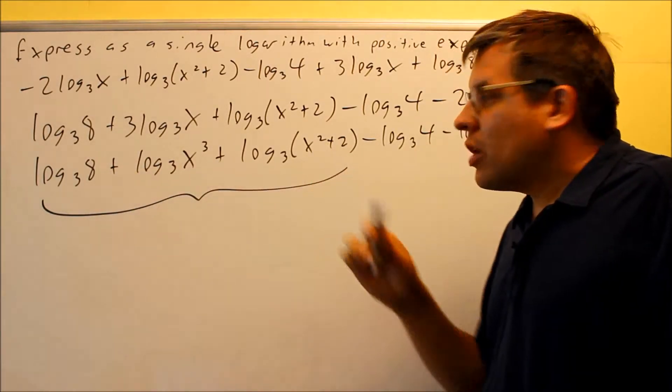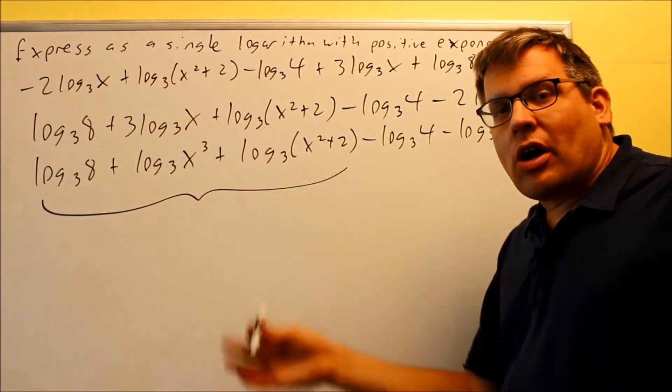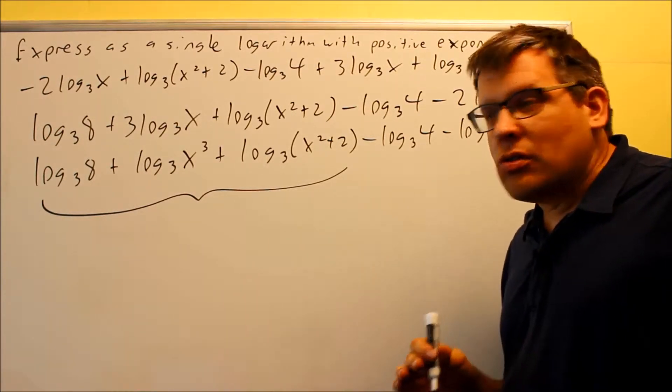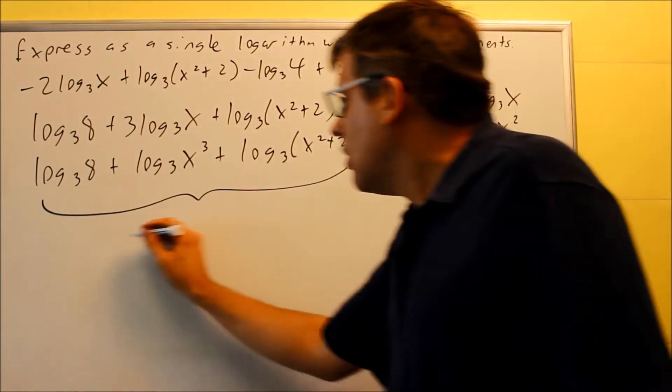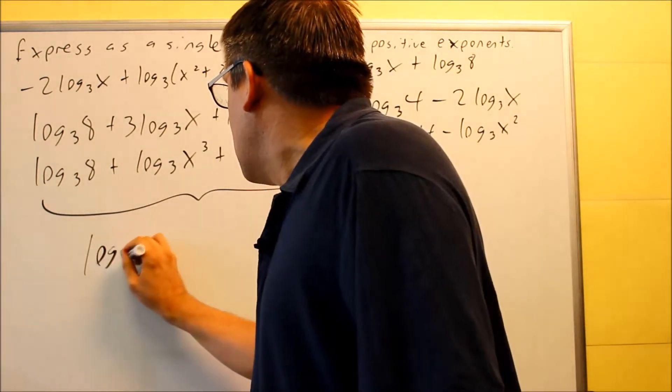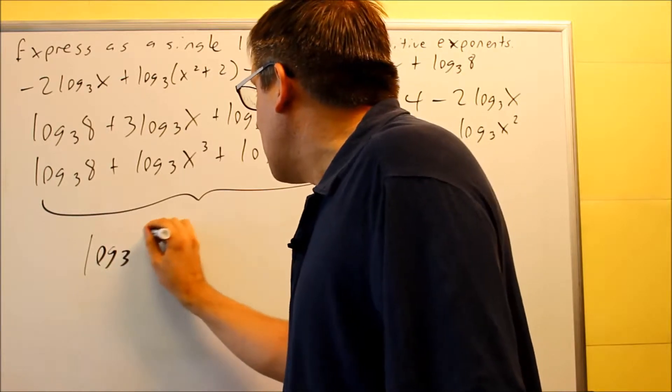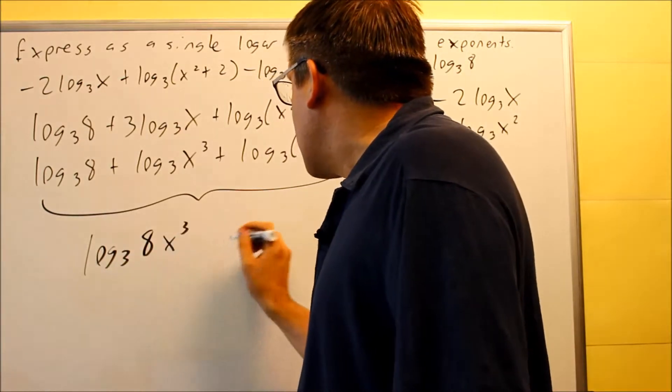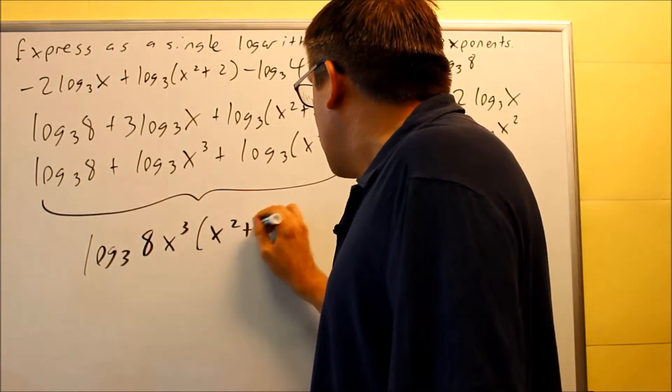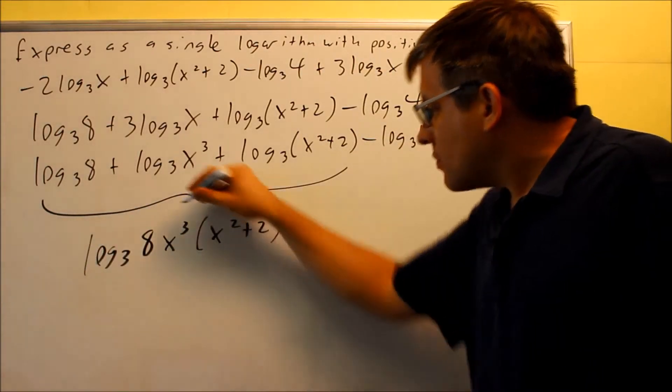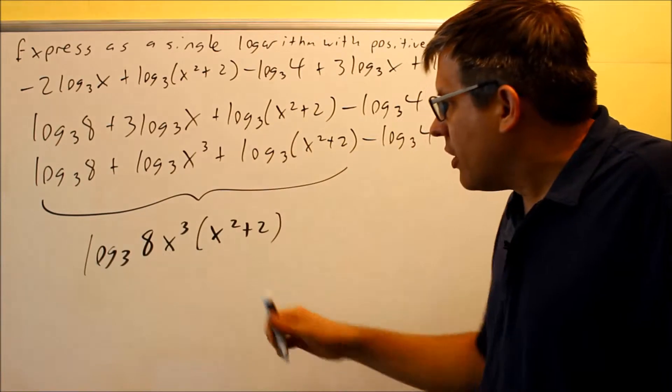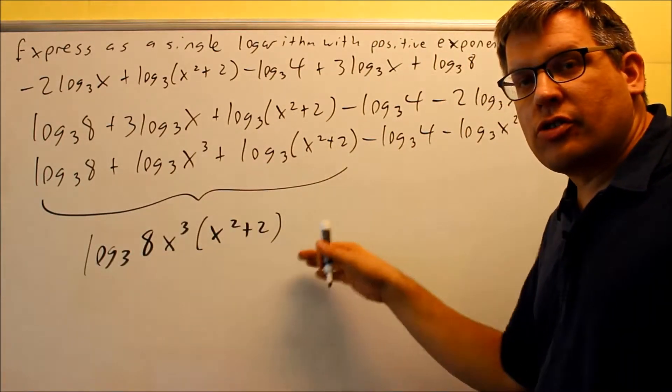Now because we have three of these, that just means that we're going to multiply all three together. You don't have to have just two. You can actually put all three of those things together by using the same rule. So that's going to turn into log base three, and I'm just going to multiply 8 times x³ times (x² + 2). So that's going to take care of the first group. That one right there combines all three logs together into a single one.